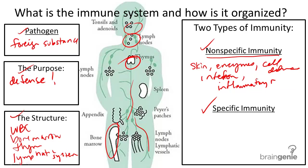Specific immunity, on the other hand, is a second line of defense. So we'll put primary and secondary. And this involves the lymphatic system.